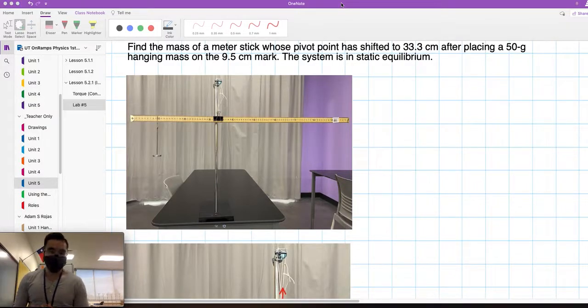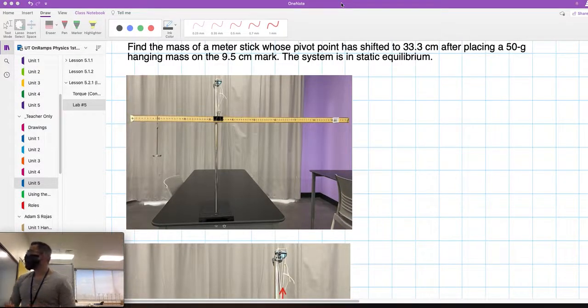We're going to find the mass of a meter stick by changing the pivot point and using only one mass. The problem reads: find the mass of a meter stick whose pivot point has shifted to 33.3 centimeters after placing a 50 gram hanging mass on the 9.5 centimeter mark. The system is in static equilibrium.